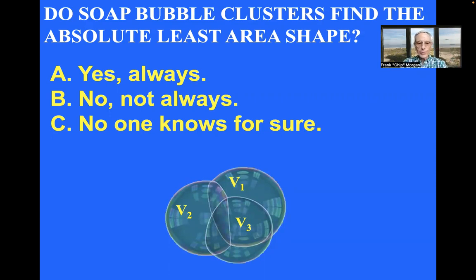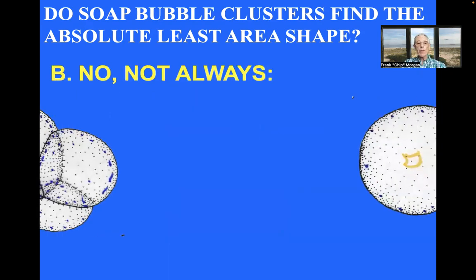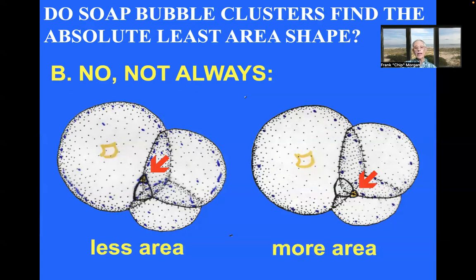Which is usually the answer in mathematics. But here the answer is B. No, not always. Soap bubble clusters, as exhibited by these two five-bubble clusters, same five volumes. The only difference is where the tiny fifth volume is placed. On the left, it's placed among the larger bubbles. And on the right, it's placed among medium-sized, smaller bubbles. With the result that the cluster on the right has a bit more area than the one on the left, and is an example of a soap bubble cluster that fails to find the absolute least area shape, although it's perfectly stable.